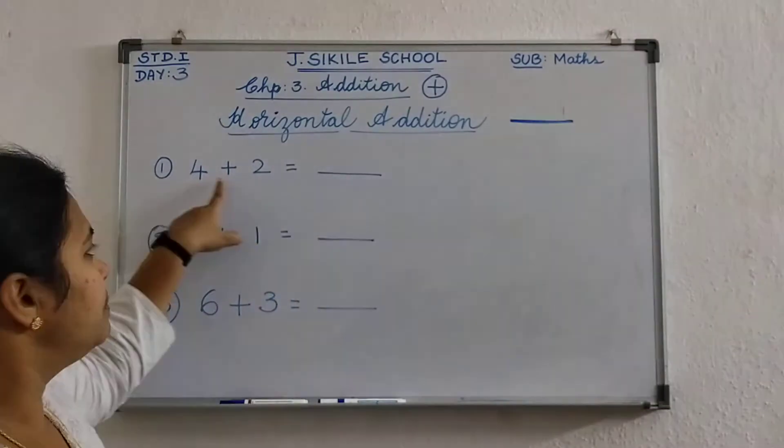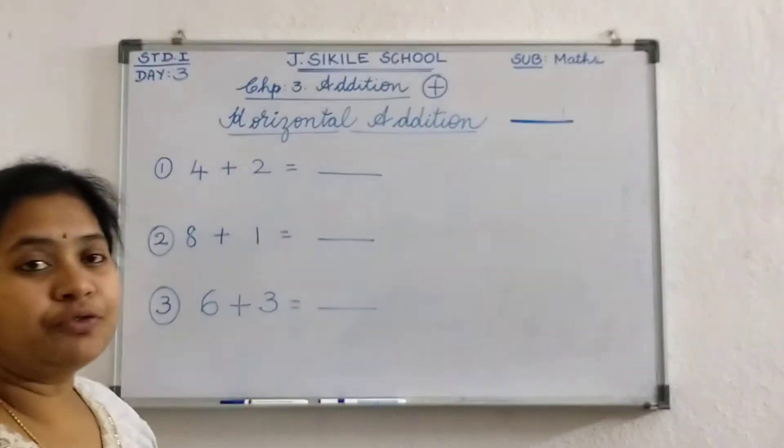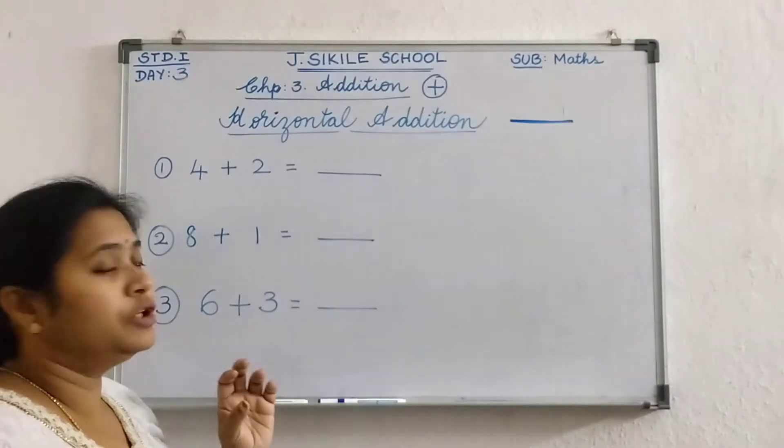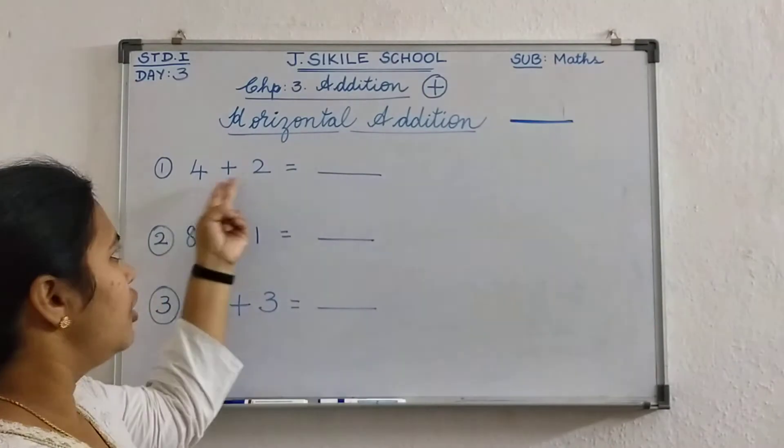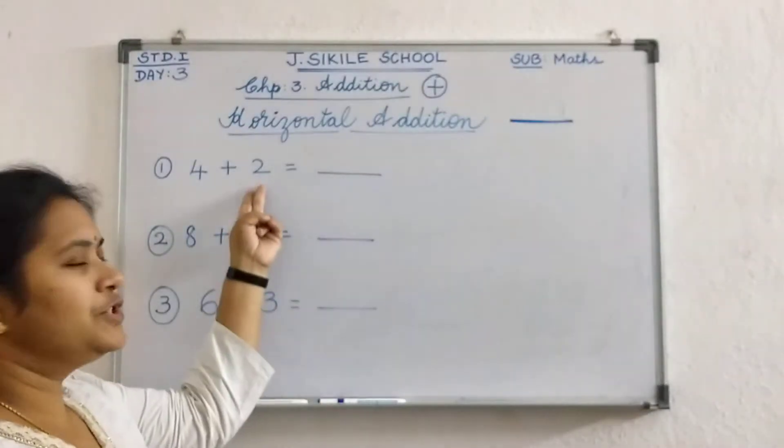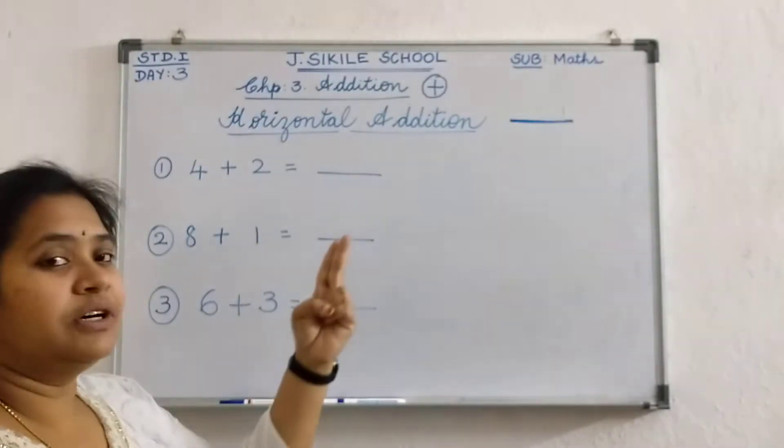Okay. Now 4 plus 2. So first what I have told you? You have to open the small number fingers. So 4 or 2. Which is small number? Very good. 2. So take 2 fingers.